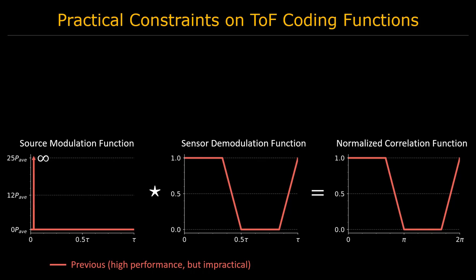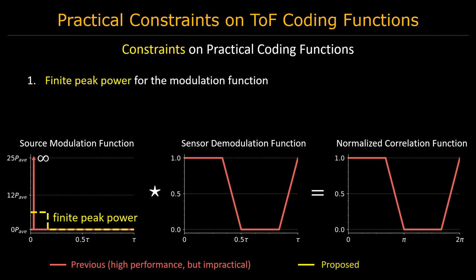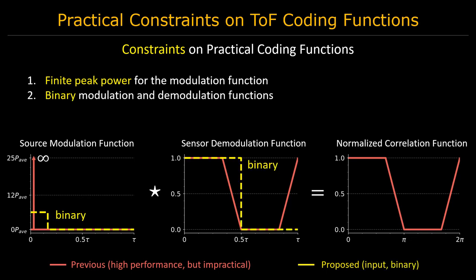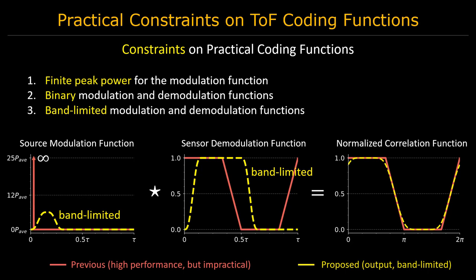Hamiltonian coding can be implemented using a high-power pulse laser and an arbitrary function generator. However, this implementation is not compatible with the practical constraints of consumer continuous-wave time-of-flight cameras. Consumer time-of-flight cameras require the modulation function to have finite peak power. Furthermore, the modulation and demodulation signals should be binary, since most time-of-flight cameras rely on digitally generated square-wave signals. Finally, the output modulation and demodulation functions should adhere to the system's band limits. While the input functions are required to be binary, the output functions, after passing through the system, have a limited bandwidth, and produce the final correlation.